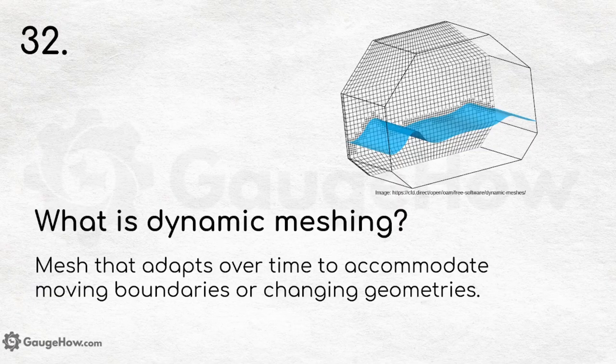What is dynamic meshing? Dynamic meshing refers to a mesh that adapts over time to accommodate moving boundaries or changing geometries.